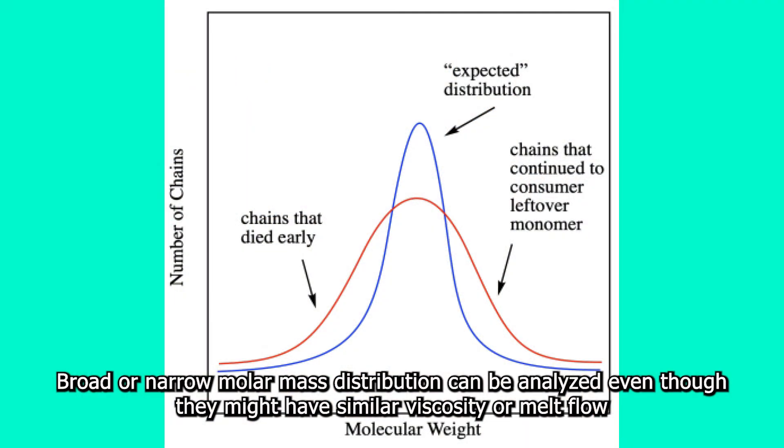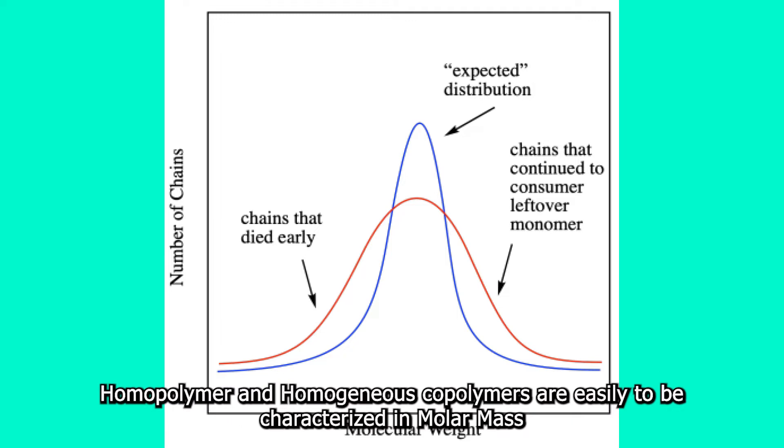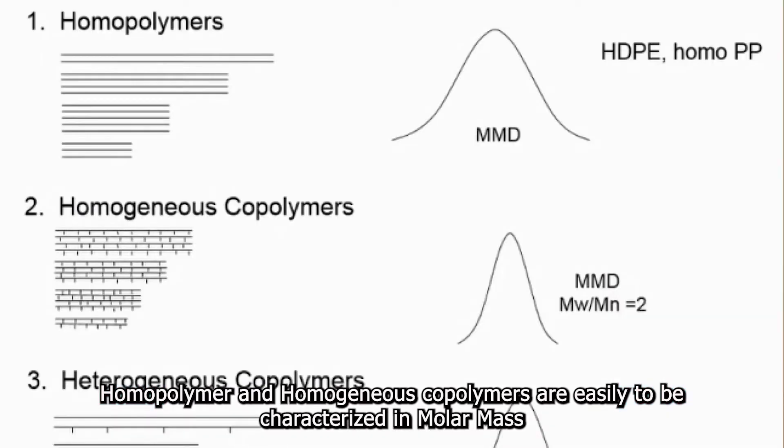Broad or narrow molecular mass distribution can be analyzed even though they might have similar viscosity or melt flow. Homopolymer and homogeneous copolymer are easy to be characterized in molecular mass.